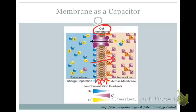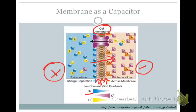The lipid membrane is a really good capacitor. Facing the outside and inside are the hydrophilic heads, while inside is the insulating hydrophobic tail region. In the cell, there are relatively more negative ions inside and relatively more positive ions outside. You also have concentration gradients, with sodium more concentrated outside and potassium more concentrated inside. Ions need channels to cross — this allows the membrane to act as a capacitor, separating charges inside and outside.